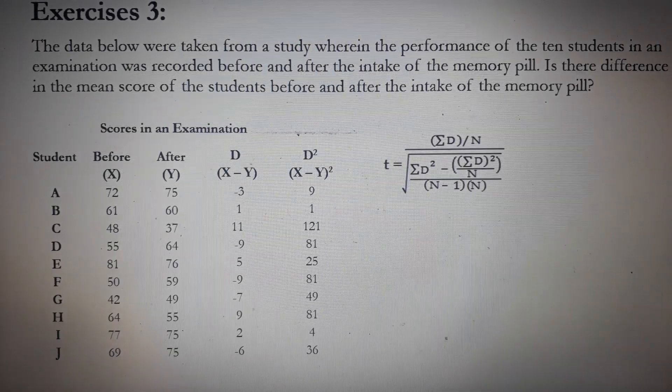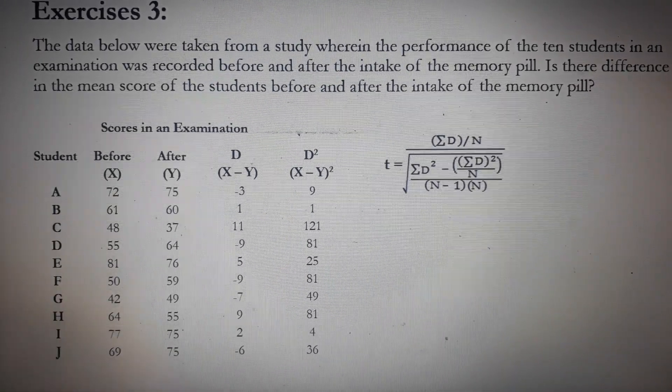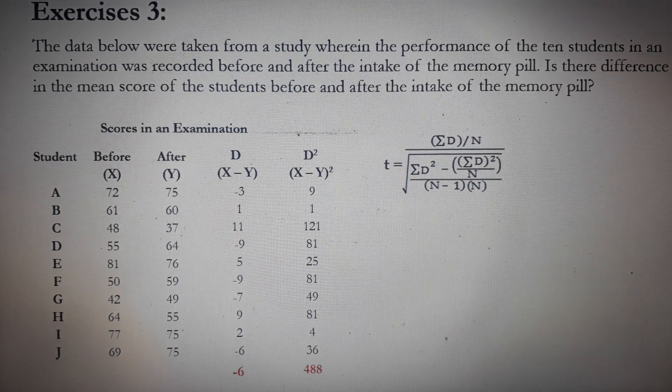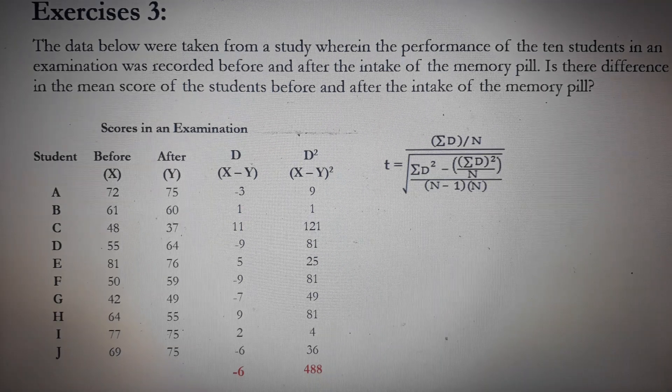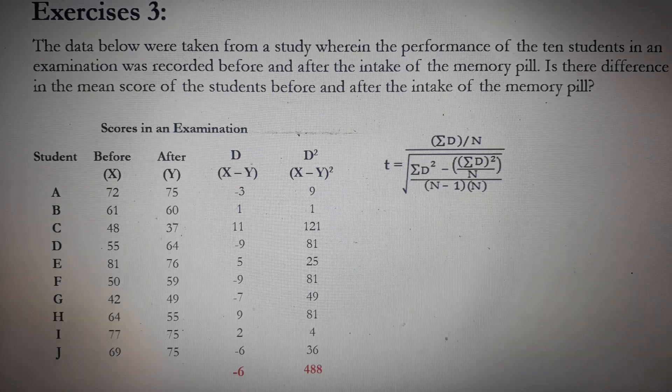Next, add the numbers in the last two columns. We have, the sum of D is negative 6, while the sum of D squared is 488.